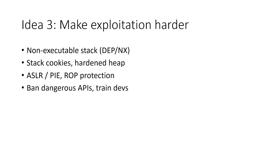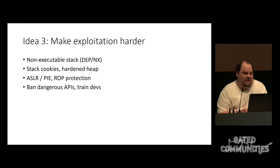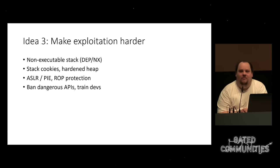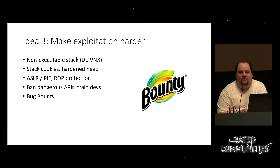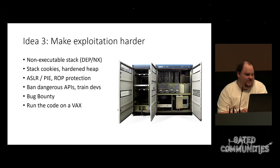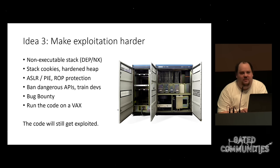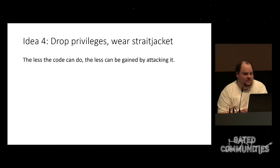So what can we do to make exploitation harder? This is where most research is focused: non-executable stack, stack cookies, hardened heap, ASLR, position-independent executables, ROP protection, banning dangerous APIs, training developers, bug bounties. But in the end, it's just a reduction of risk. The idea I'll talk about today is putting your code in a straitjacket — dropping privileges so much that even if someone finds a bug and exploits it, the access they gain is minimal or nonexistent.